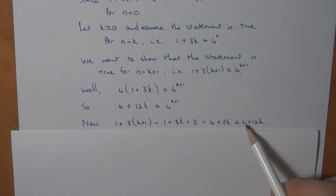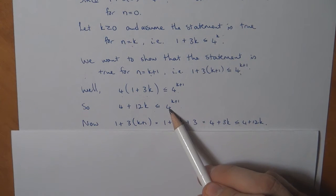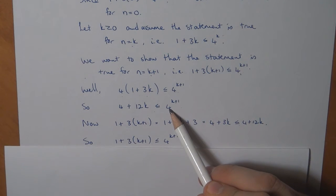Which is less than 4 plus 12k, which in turn will be less than or equal to 4 to the k plus 1.